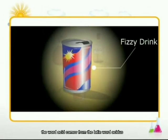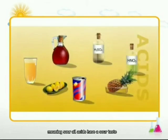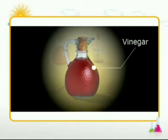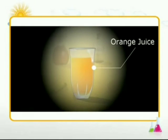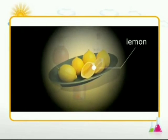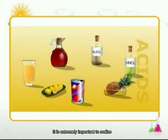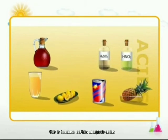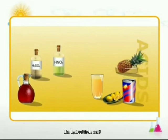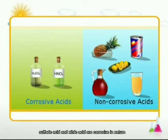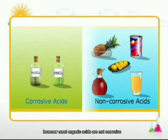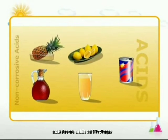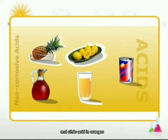The word acid comes from the Latin word acidus, meaning sour. All acids have a sour taste — for example, sulfuric acid, vinegar, orange juice, and lemon. It is extremely important to realize that all acids should not be tasted to test their sour nature. This is because certain inorganic acids like hydrochloric acid, sulfuric acid, and nitric acid are corrosive in nature. However, most organic acids are not corrosive, even when concentrated — examples are acetic acid in vinegar and citric acid in oranges.